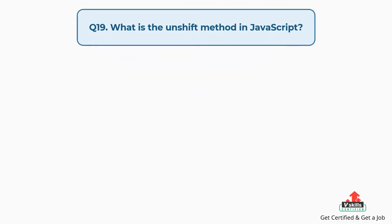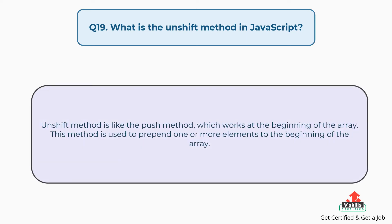Question number nineteen: what is the unshift method in JavaScript? The unshift method is like the push method, which works at the beginning of the array. This method is used to prepend one or more elements to the beginning of the array.